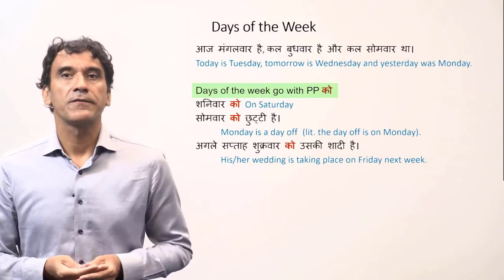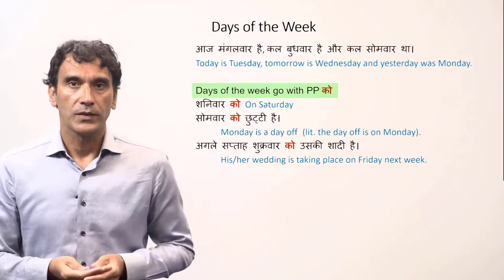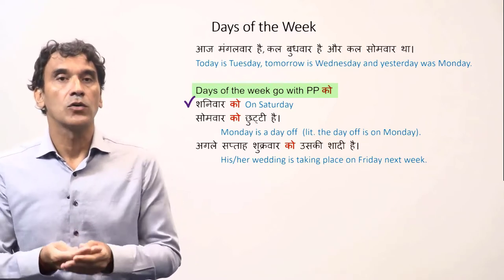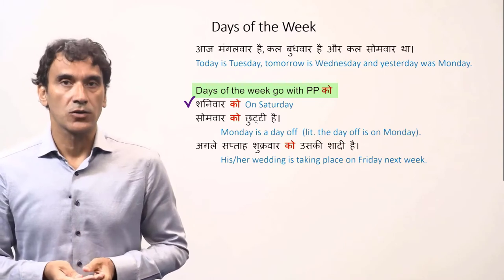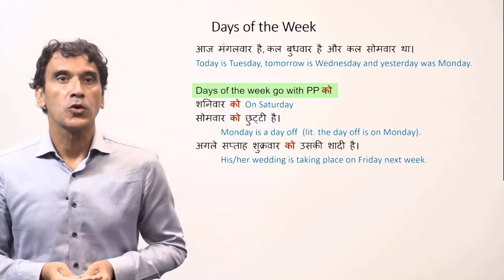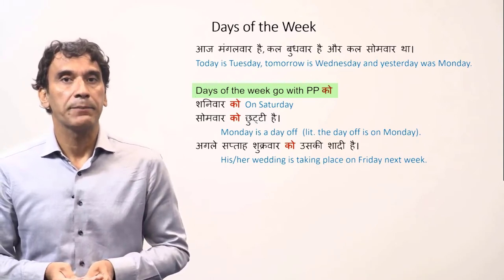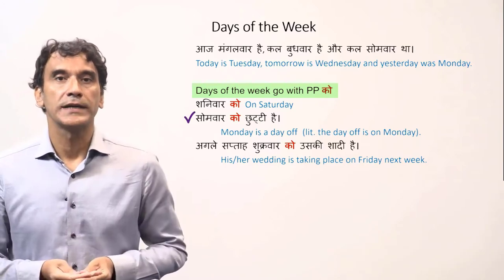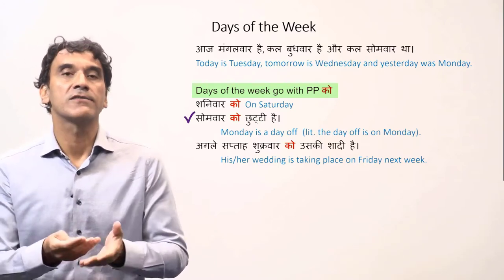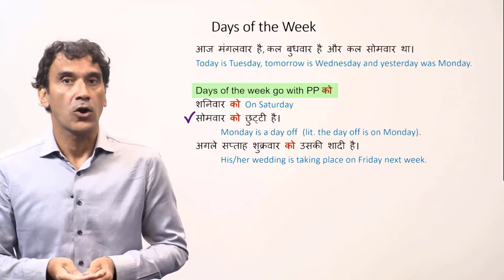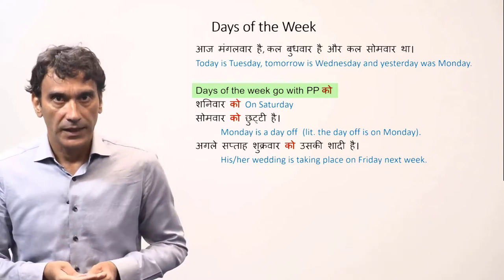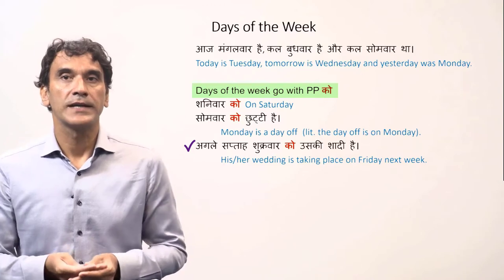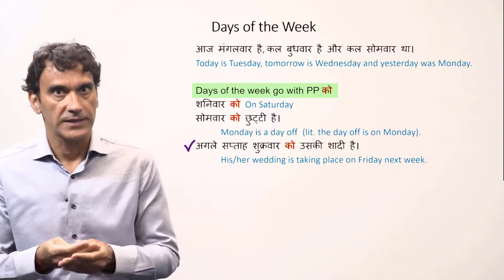The days of the week go with the postposition 'ko'. If you want to say 'on Saturday', it will be 'shaniwar ko' or 'sanichar ko'. The postposition 'ko' is used when saying something happened on a particular day. For example: 'somwar ko chhutti hai' (Monday is a day off — literally, the day off is on Monday). 'Agle saptah shukravar ko uski shadi hai' (his/her wedding is taking place on Friday next week).